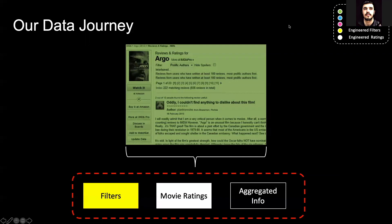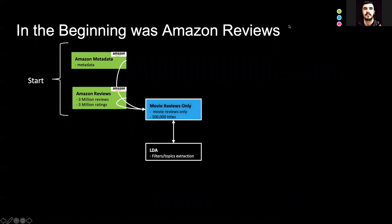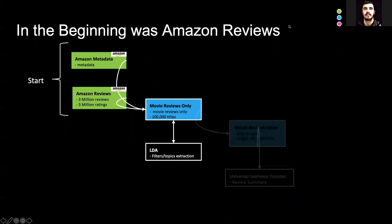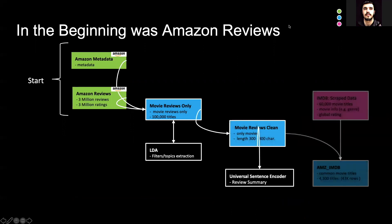These all came in two phases. First, we used an LDA model to identify the emotions in the reviews. Second, we utilized TensorFlow and Universal Sentence Encoder to extract the most representative sentences in the reviews. Last but not least, we scraped the IMDB repository and acquired general information about movies. In the end, we created a repository of 4,300 movie titles for our product.